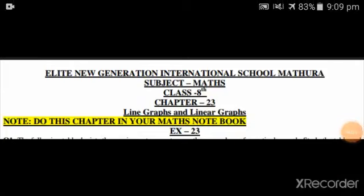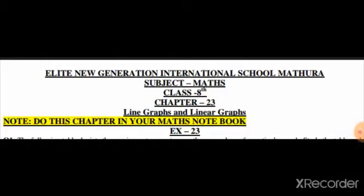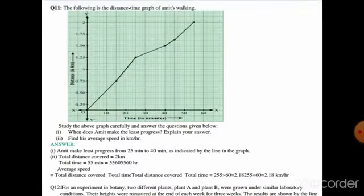Hello students, how are you all? Today we are going to do the remaining questions of chapter 23, that is line graph and linear graph. Starting exercise 23, question number 11: the following is the distance-time graph of Amit's walking. Study the above graph carefully and answer the questions given below.